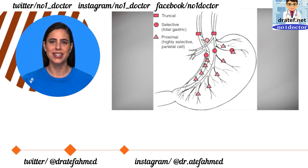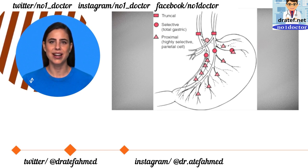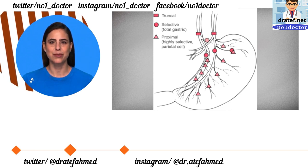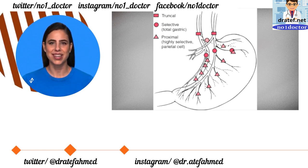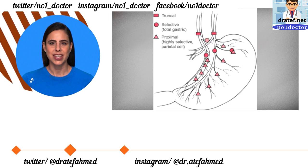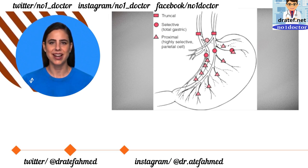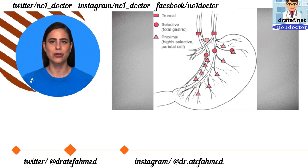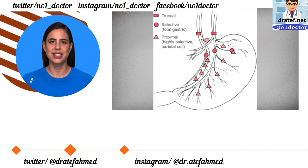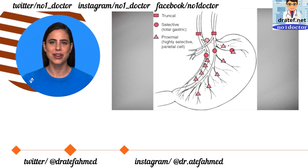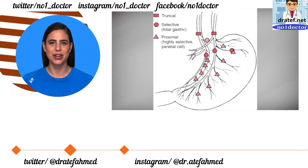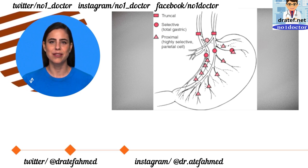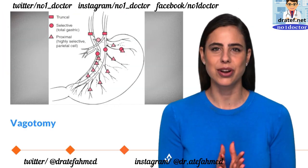Other alterations caused by truncal vagotomy include gastric effects: decreased acid output by 90%, increased gastrin, and gastrin cell hyperplasia. Non-gastric effects include decreased exocrine pancreas function, decreased postprandial bile flow, increased gallbladder volumes, and decreased release of vagally mediated hormones.